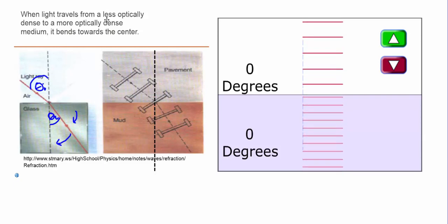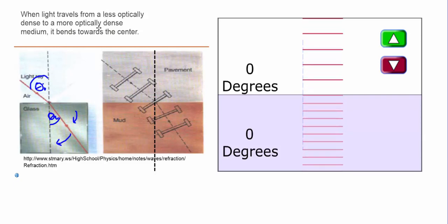So again, you go from less optically dense or a low index of refraction to a higher index of refraction, that bends towards the center. This is a great tool to remember.